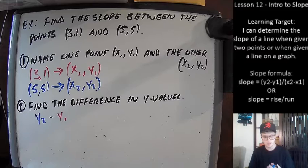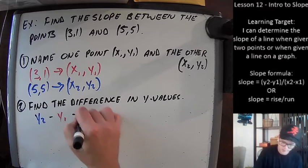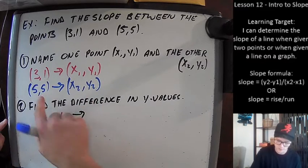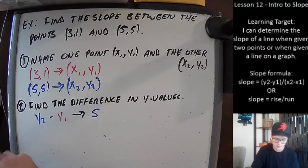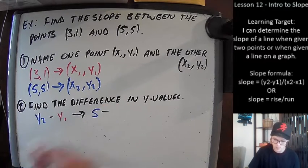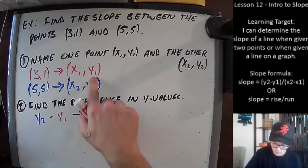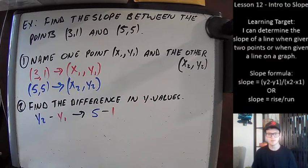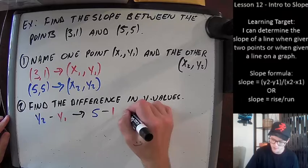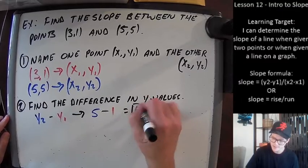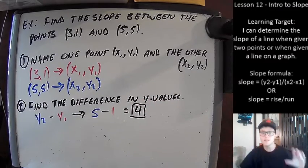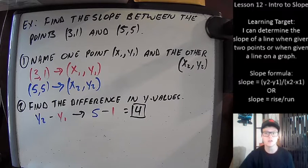We plug our values in: y₂ was five, so it's going to be 5 minus y₁, which is 1. Five minus one is four. So four is the difference in our y values. This isn't our slope — we're not done yet — we're going to use this information in a little bit.